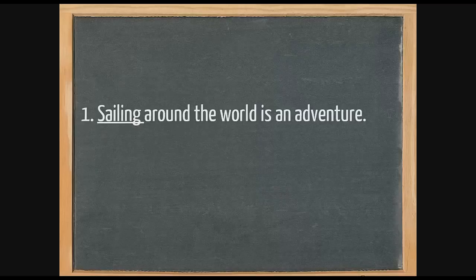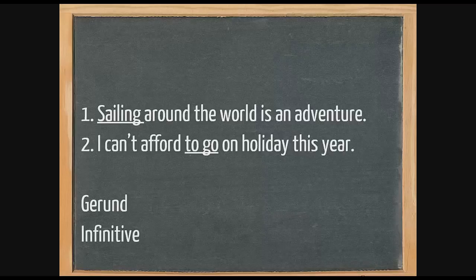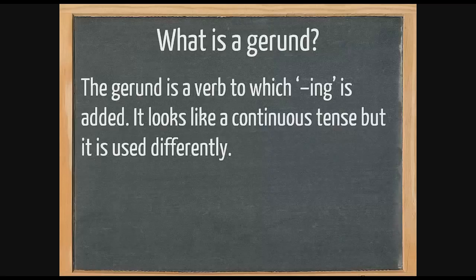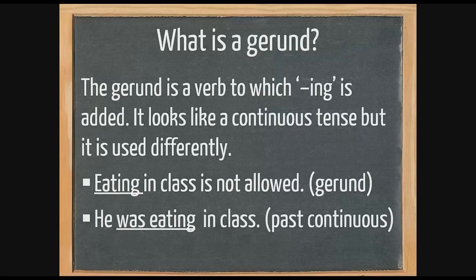Take a look at these sentences: 'Sailing around the world is an adventure' and 'I can't afford to go on holiday this year.' In the first sentence, 'sailing' is a gerund; in the second, 'to go' is an infinitive. A gerund is a verb to which -ing is added. It looks like a verb but is used as a noun. For example, 'Eating in class is not allowed' — here 'eating' is the subject, a noun, whereas 'he was eating in class' is a past continuous tense.